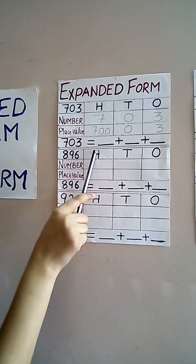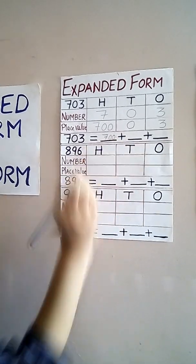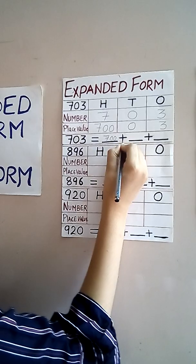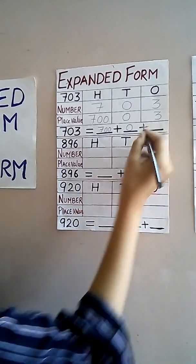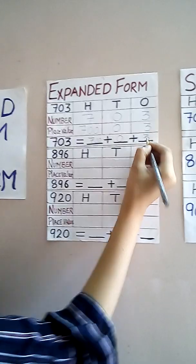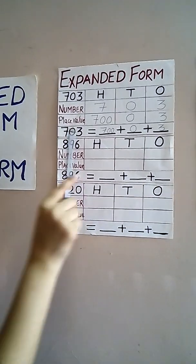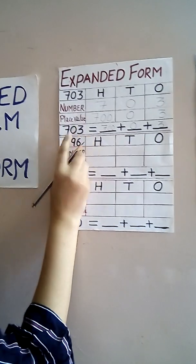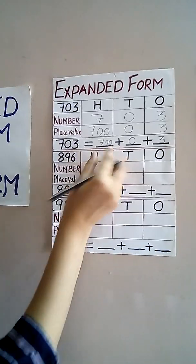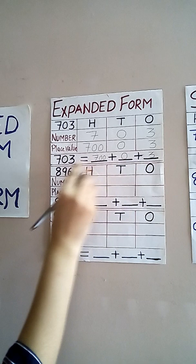703. We have to write this: 700. And in the expanded form, we have to put the sign of plus. Then we write the tens digit — 0 means the tens digit. Then again a plus. Then the ones digit 3. So we get 703. When we add these numbers, we get this number only. This is not any other number — this is the expanded form of this number. We speak 700, so we write that number, and 3. So 0 will remain 0 and 3.